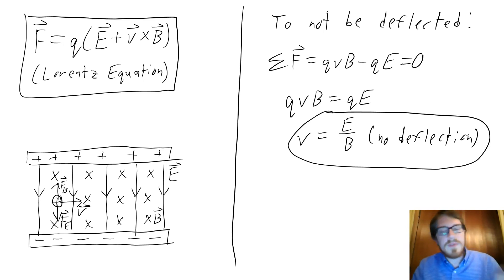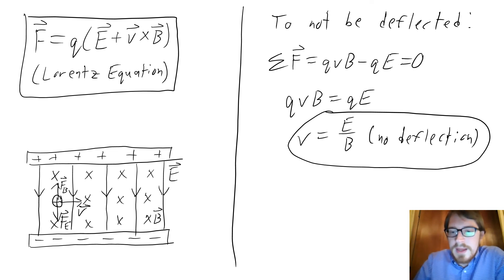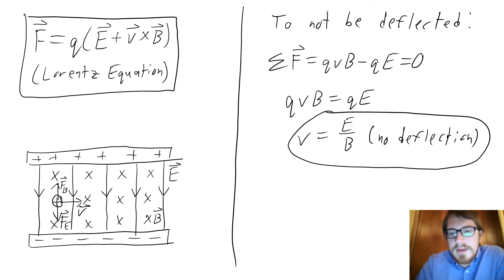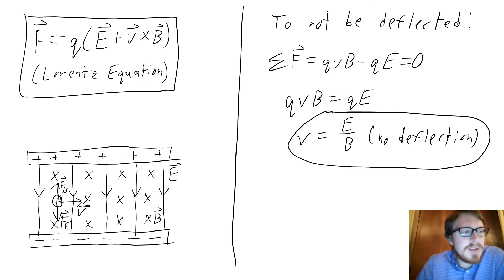We can find that specific speed using Newton's second law. For the particle not to be deflected, it should not be accelerating, so the sum of forces equals zero. The magnetic force is pointing upward and the electric force is pointing downward, so QVB minus QE equals zero, meaning QVB and QE must be equal. Solving for V gives the required speed: V = E/B.